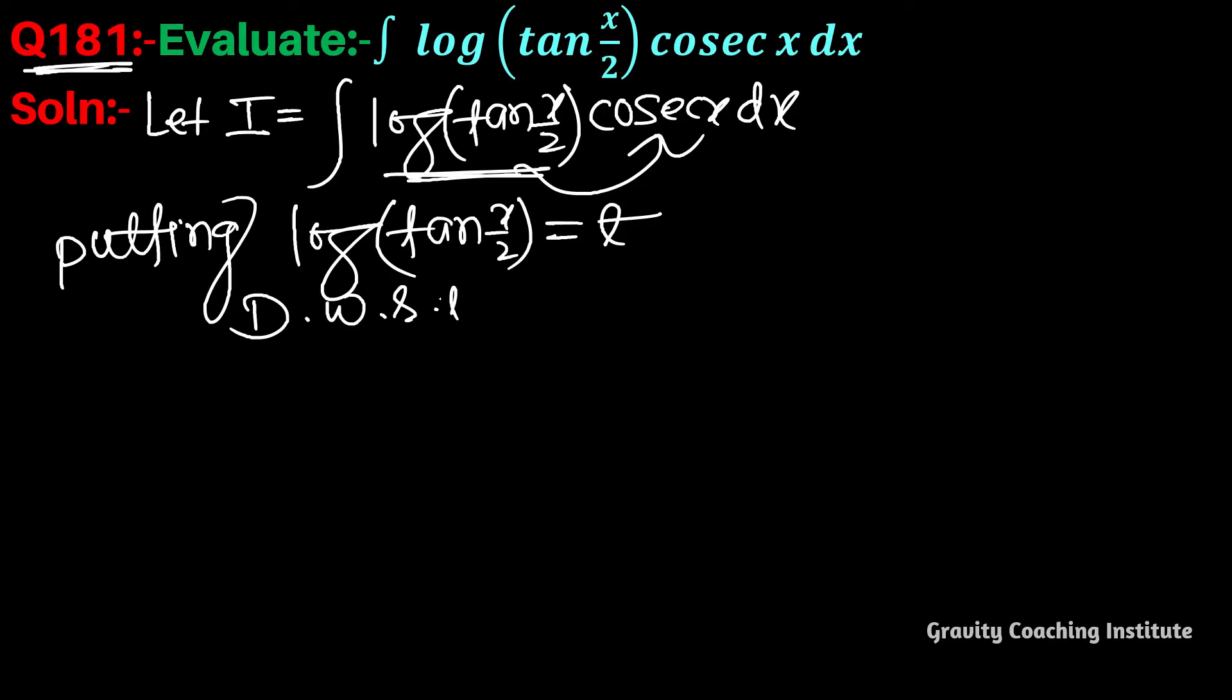differentiate with respect to t. This is general use. First, d/dt of log(tan(x/2)) will be 1/tan(x/2), then we differentiate tan(x/2), which gives sec²(x/2) × 1/2.